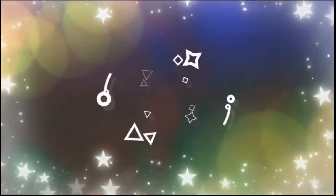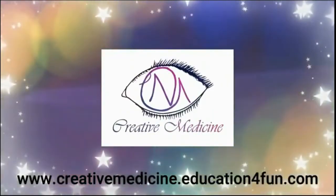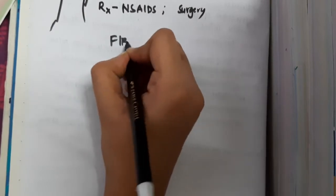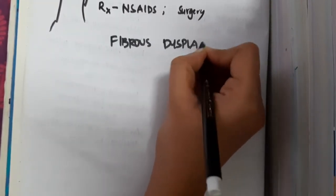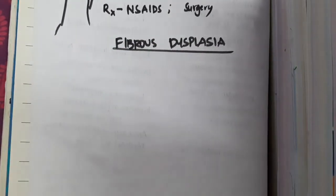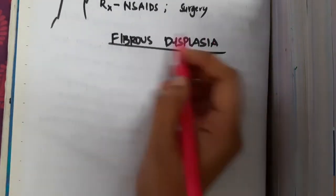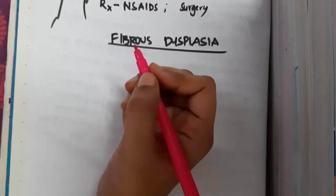Welcome to Creative Medicine. In this lecture we will learn about fibrous dysplasia. Fibrous dysplasia is a benign tumor. The cell of origin in fibrous dysplasia is the fibroblast — fibroblasts are also present in the bone matrix.